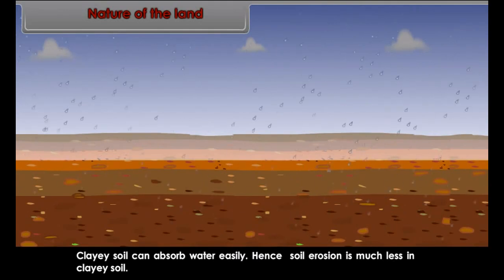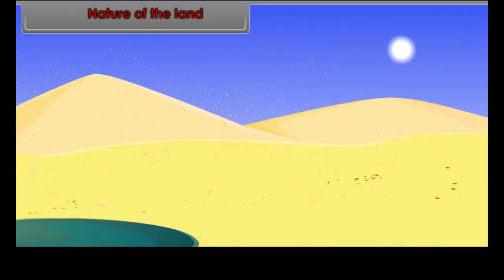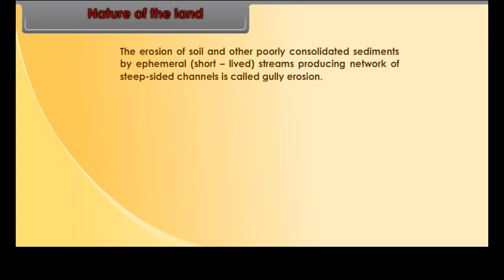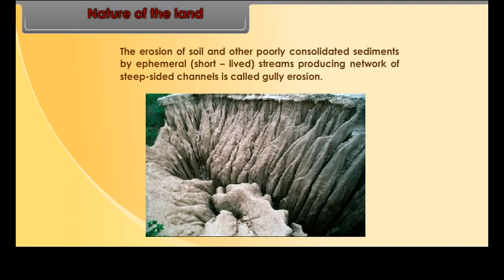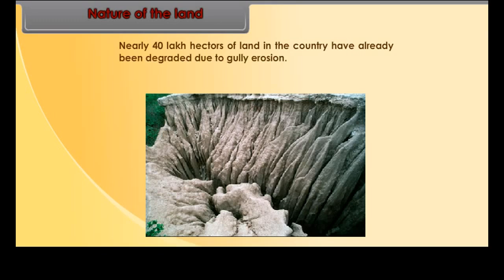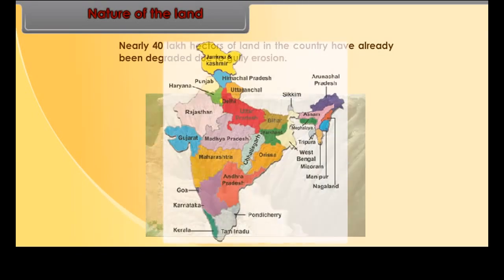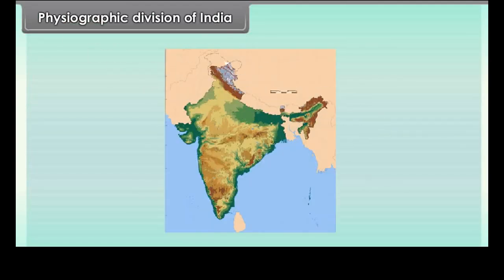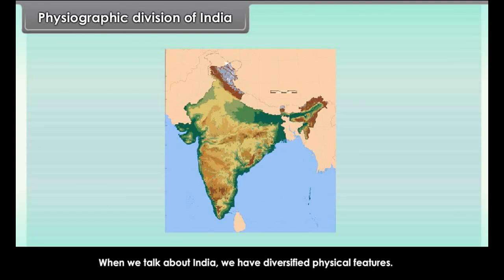Nature of the land is an important factor for soil erosion. Clay soil can absorb water easily, hence soil erosion is much less in clay soil. Soil erosion by water is also much less on sandy soils. Gully erosion is the erosion of soil and poorly consolidated sediments by ephemeral (short-lived) streams producing a network of steep-sided channels. Nearly 40 lakh hectares of land in the country have already been degraded due to gully erosion, which is prevalent in the states of Uttar Pradesh, Madhya Pradesh, Bihar, Rajasthan and Gujarat.